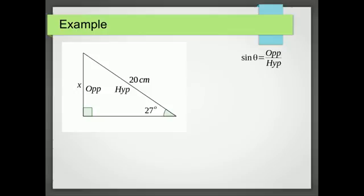So we write down sine of the angle equals the opposite over the hypotenuse. We then fill out the ratio, so we know it's sine of 27 equals the opposite, which is x over 20. We then multiply by the denominator to get x equals 20 multiplied by sine 27, and that gives us x equals 9.1 centimeters. I hope you found that helpful.